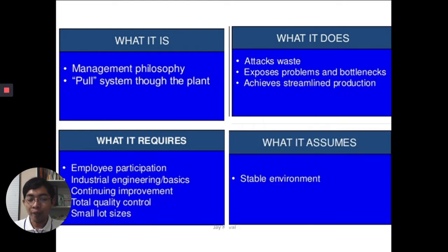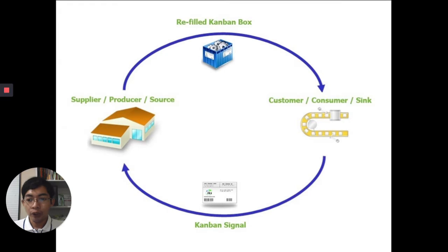JIT also requires continuing improvement, total quality control, and small lot sizes. The assumption here is that we have a stable environment. So when we implement just-in-time production systems, we reduce the inventory — we will order from our suppliers at the time that goods will be put into production. As much as possible, we want to reduce or eliminate waste in the company so that we can contribute to the increase of our profit.